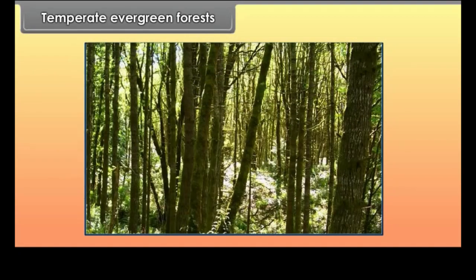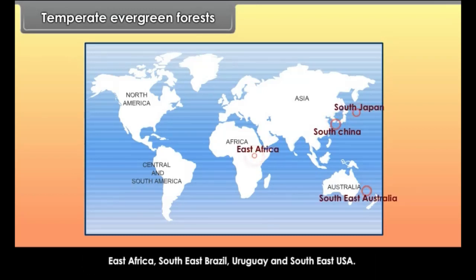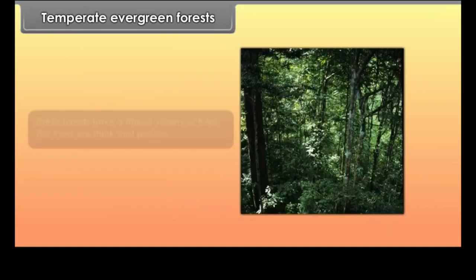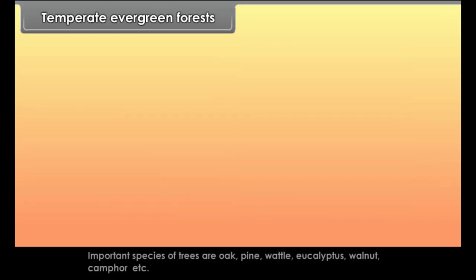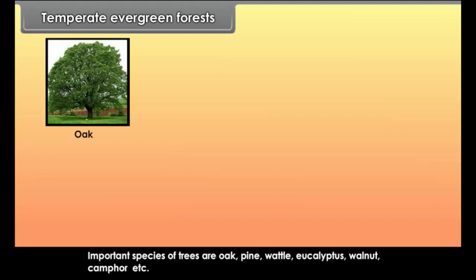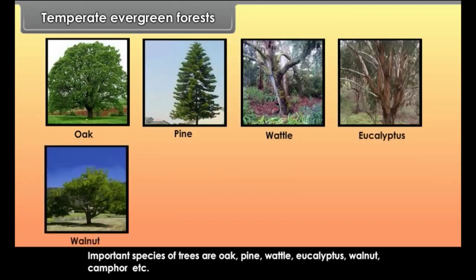Temperate Evergreen Forests are found in the warm temperate areas of South China, South Japan, Southeast Australia, East Africa, Southeast Brazil, Uruguay and Southeast USA. These forests have a mixed variety of trees that are thick and profuse. Important species of trees are oak, pine, wattle, eucalyptus, walnut and camphor.